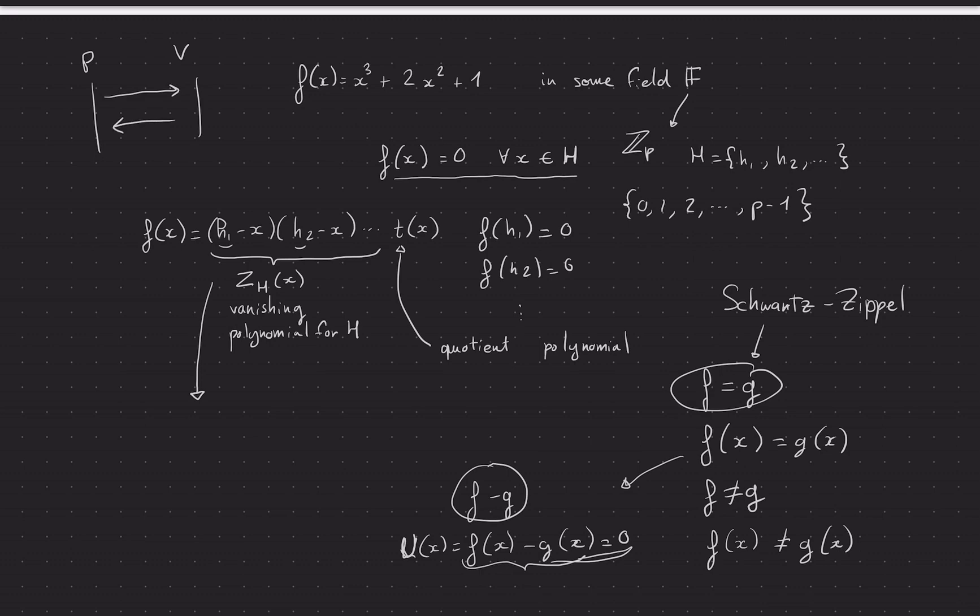Basically what you can do as a verifier: you can send me some random point, let's call it r in the field, and then you can say send me the evaluation of f(r) and then the evaluation of t(r).